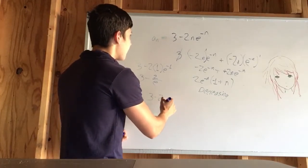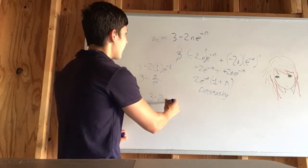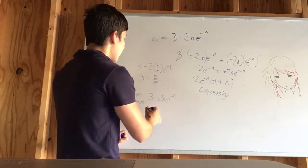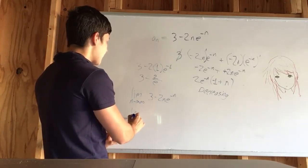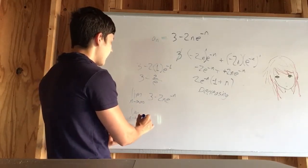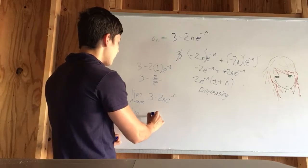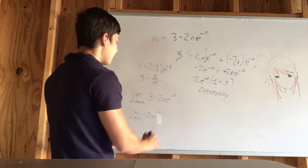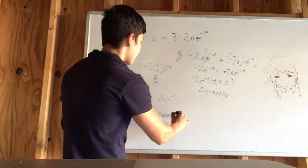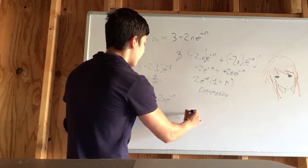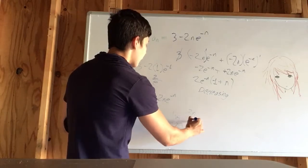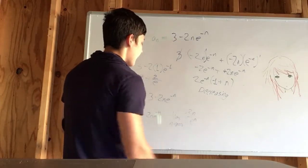So we plug in infinity. We've got 3 minus 2n e to the negative n. The 3 doesn't matter, so we've got the limit as n approaches infinity of negative 2n e to the negative n, which is the same thing as the limit as n approaches infinity of negative 2n over e to the n.